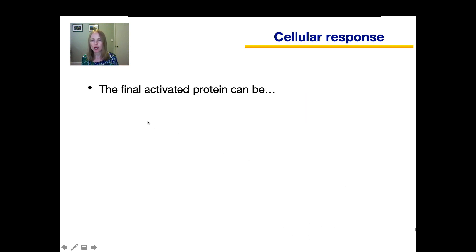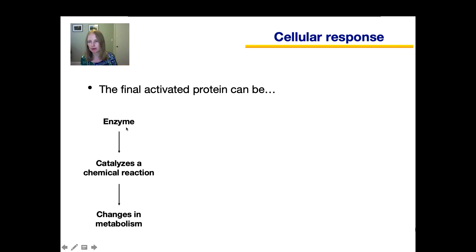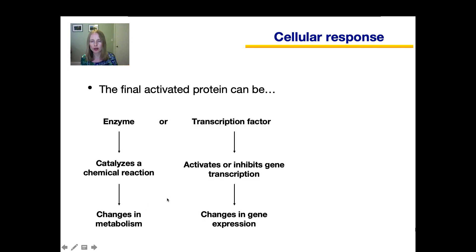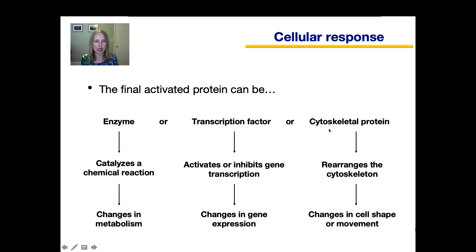Finally, we have the cellular response. The final activated protein could be an enzyme that catalyzes a chemical reaction leading to changes in the metabolism of the cell. Or it could be a transcription factor, which has the ability to either activate or inhibit gene transcription, leading to changes in gene expression. Lastly, the final activated protein could be a cytoskeletal protein, which rearranges the cytoskeleton of the cell, leading to changes in either cell shape or cell movement.